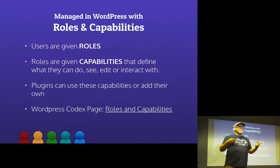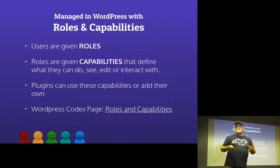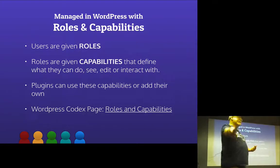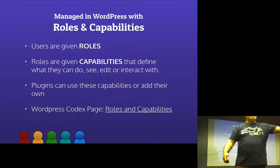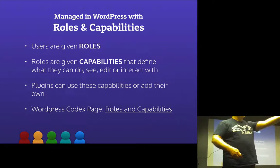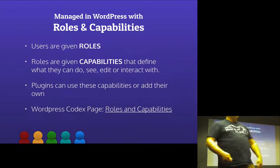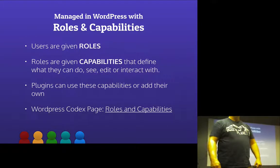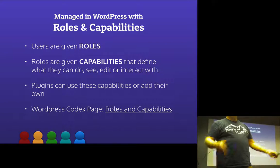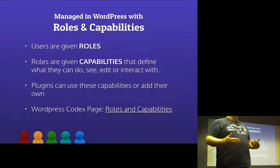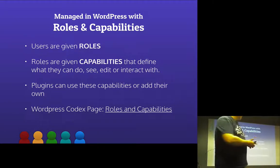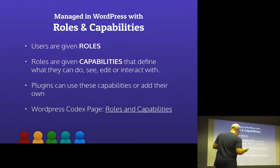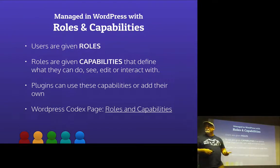You manage the roles inside WordPress with capabilities. Users are given roles — I can set up Elena as admin, Boo as an editor, you as an author, and Danielle as a contributor. But what actually defines what you're able to do within WordPress is your given role. The capabilities define what you can do, see, edit, or interact with.